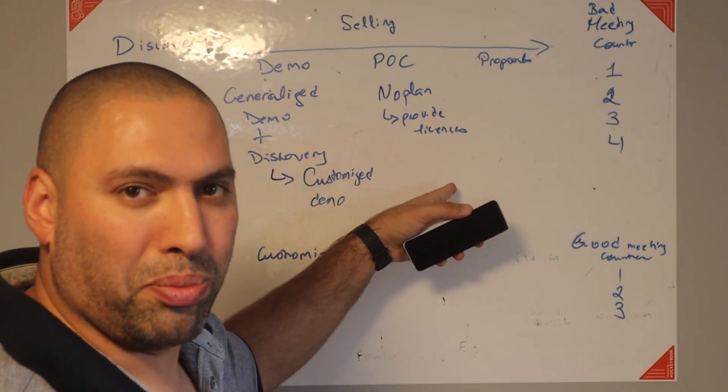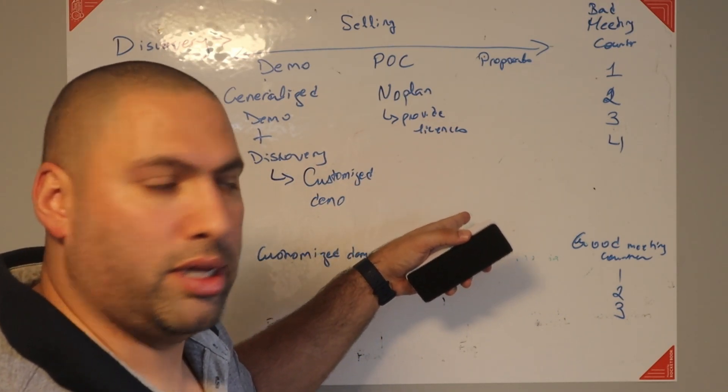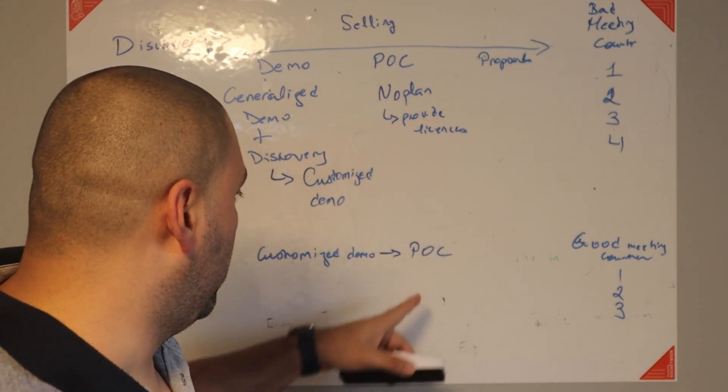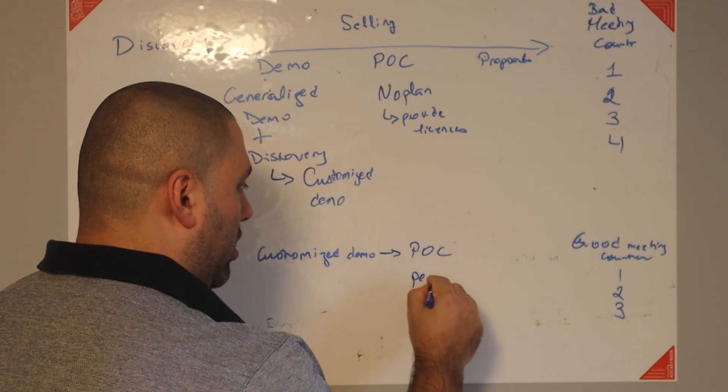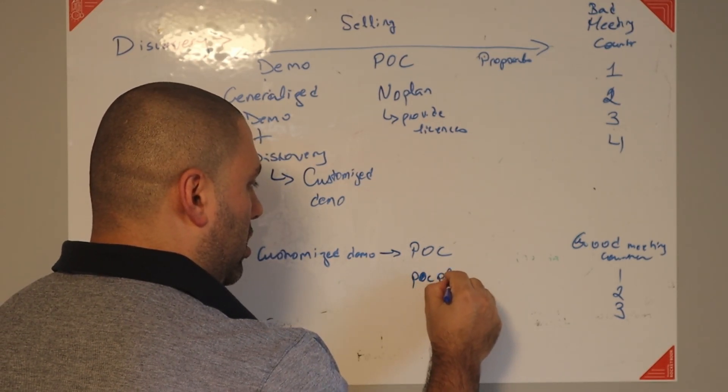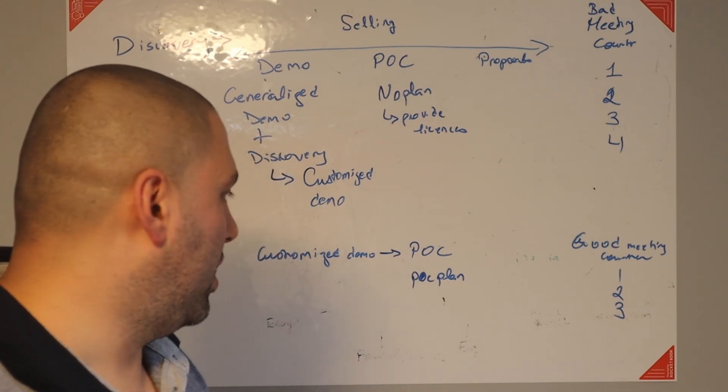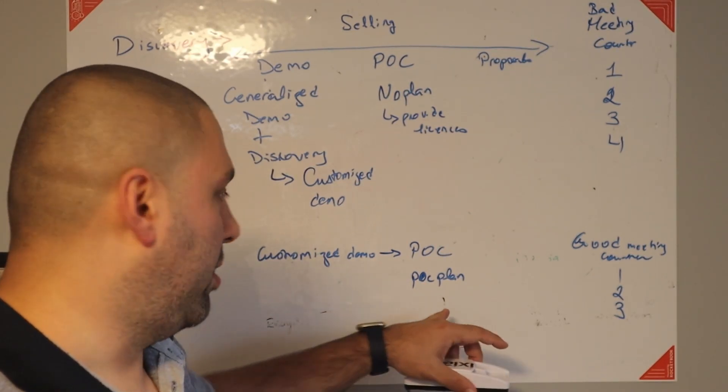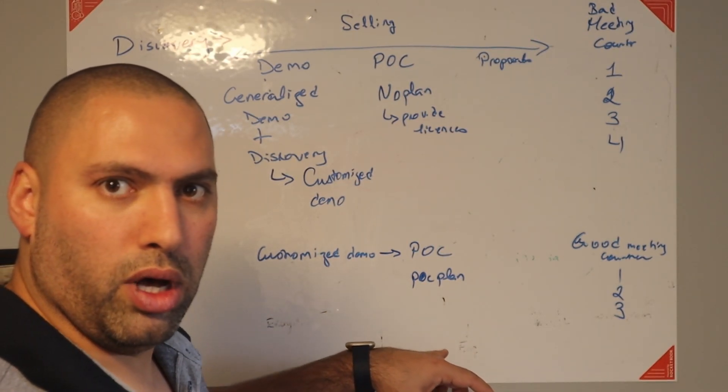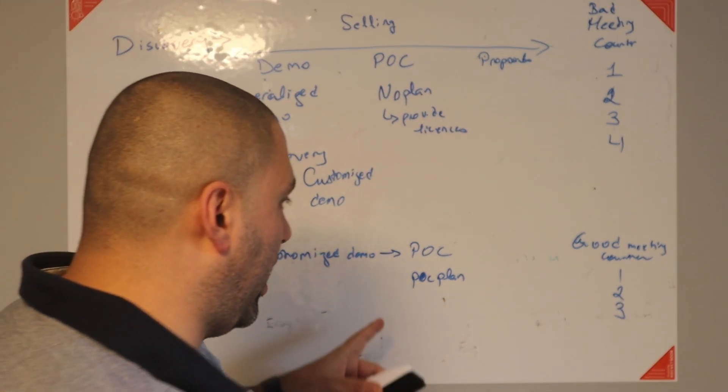When you don't plan, the urgent tends to take the time of the important. But if you're doing it well, you have a POC plan. So you have one meeting for a POC plan where you come up with success criteria. We're going to be talking about POC plans later. We can have another video. But you create success criteria, you create milestones, go no-go action, and you move on from there. So you did add a meeting here.